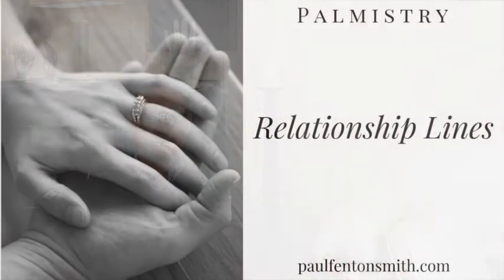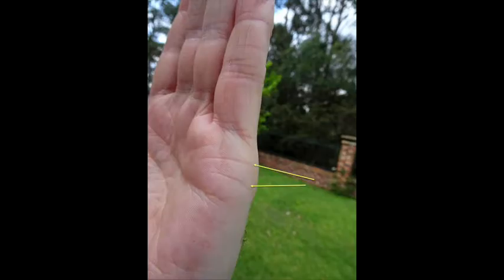Today in our palmistry series we're dealing with the lines and in particular the love relationship lines. These lines are found horizontally running across the hand under the little finger. It's best to look at the writing hand as this is likely to confirm the present and future opportunities.